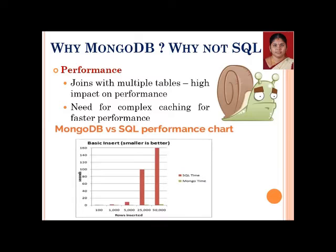In the performance chart, the Y-axis shows seconds and the X-axis shows number of rows inserted. MongoDB's time for each insert operation is very minimal compared to SQL. From this chart alone, we can see that for big data, we need a database beyond traditional SQL.